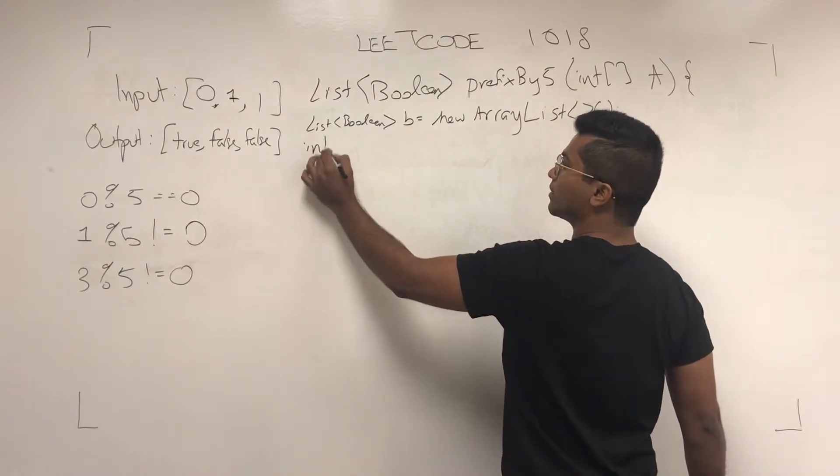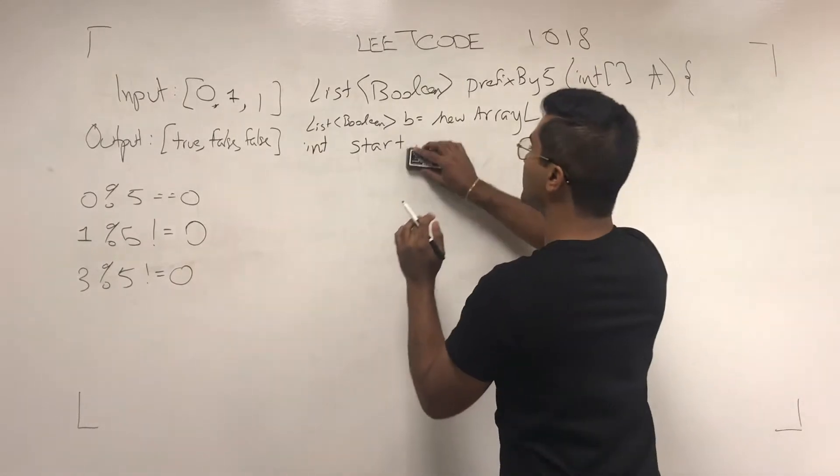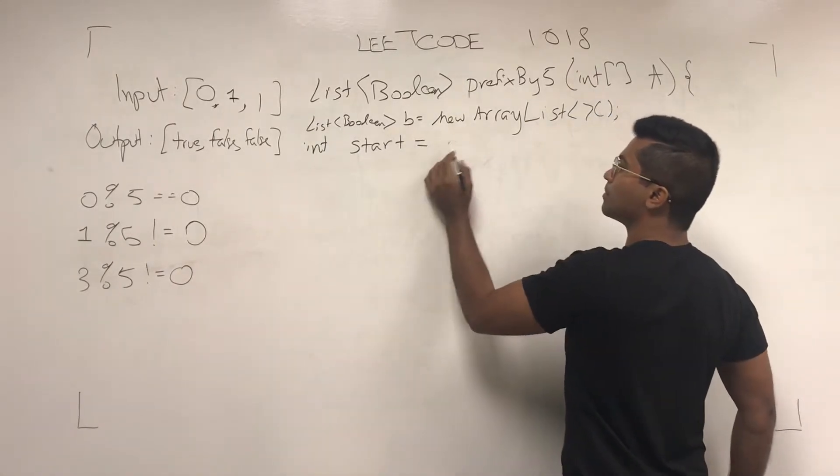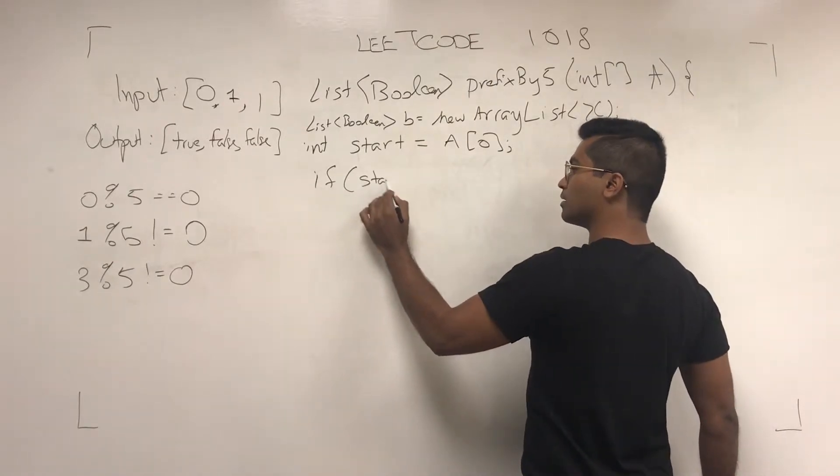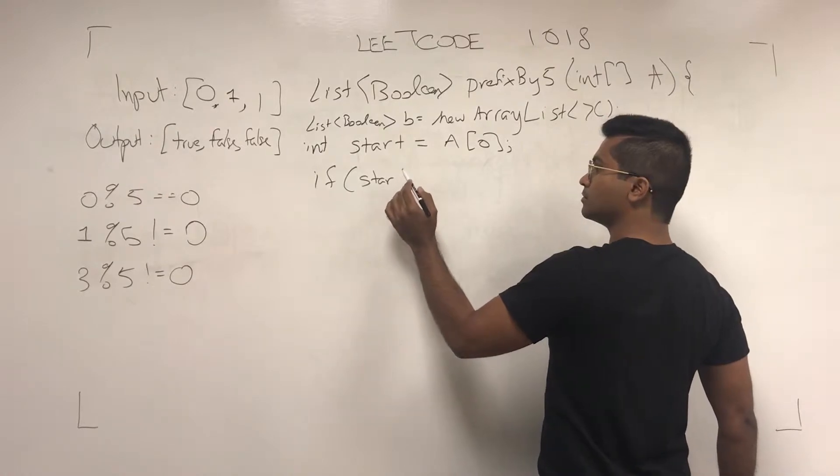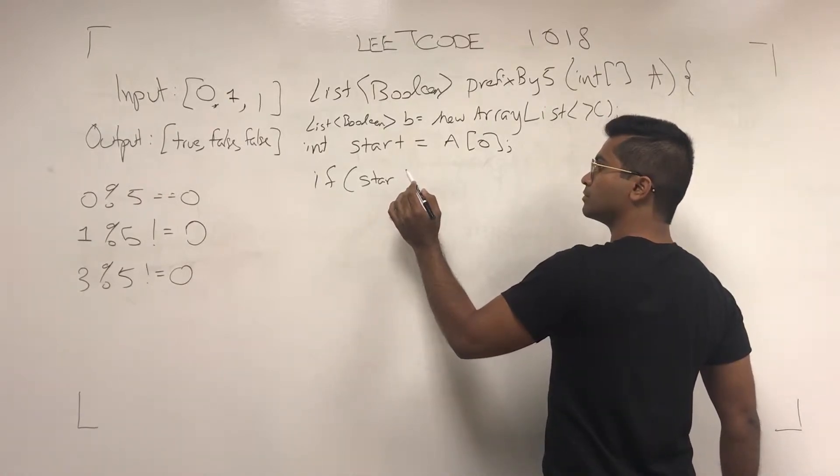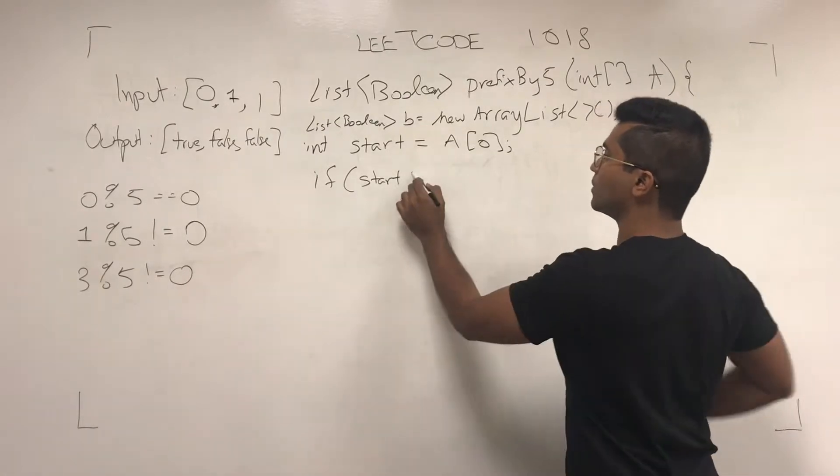If, okay, we'll keep a dummy variable and we'll make it equal to the first one. So if start is divisible by 5,